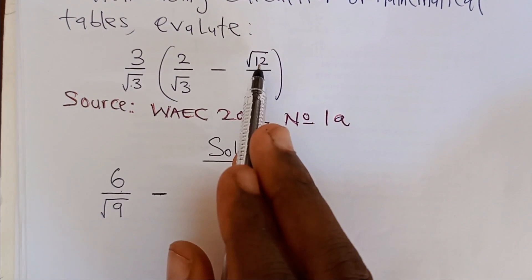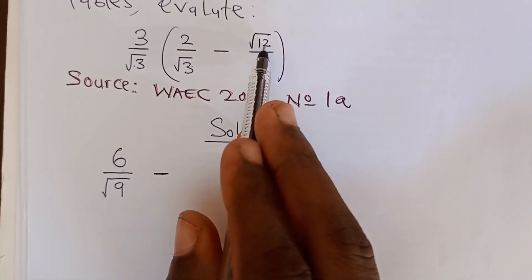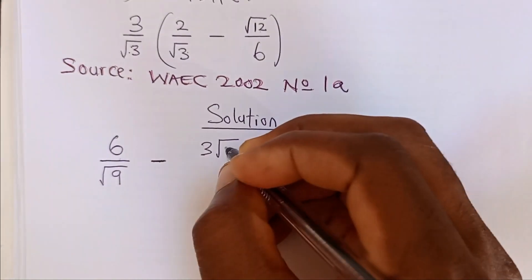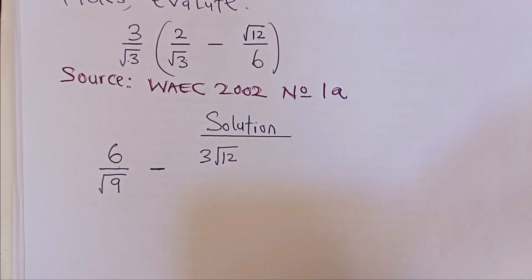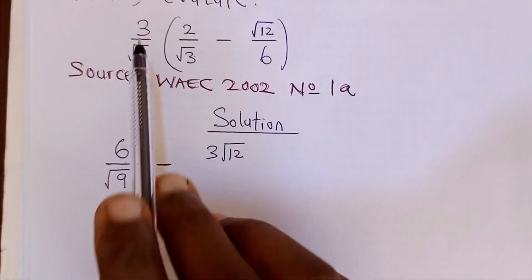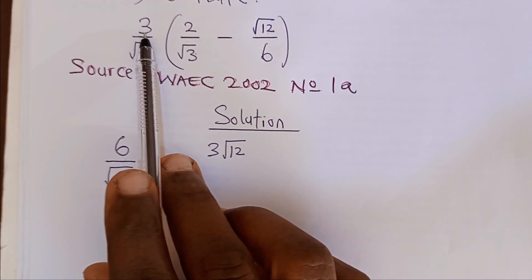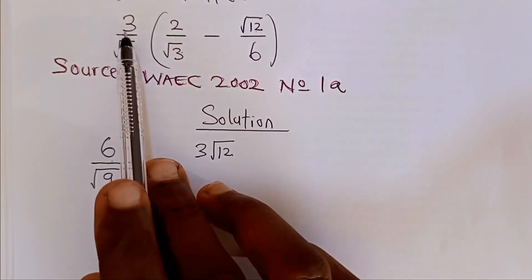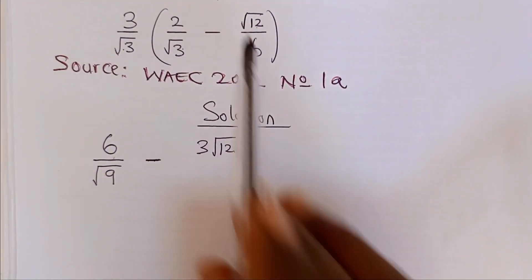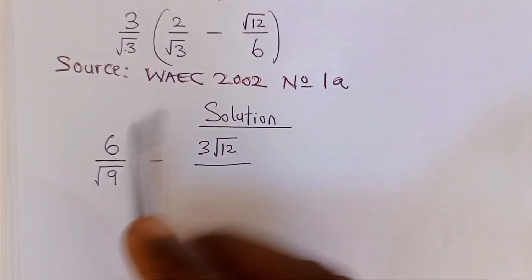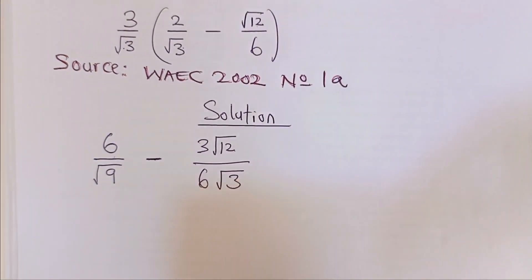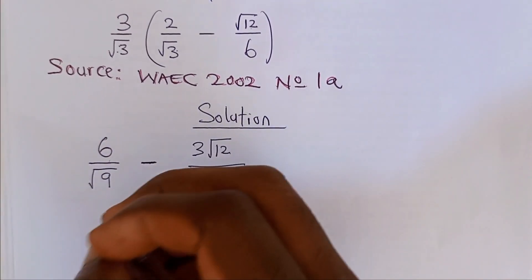Minus 3 times root 12 will give me 3 root 12, not root 36. This one has no roots. So 3 times the one in front here will give you 3, so 3 times root 12 is 3 root 12 over root 3 times 6, which will give us 6 root 3. Let's take it a step further.